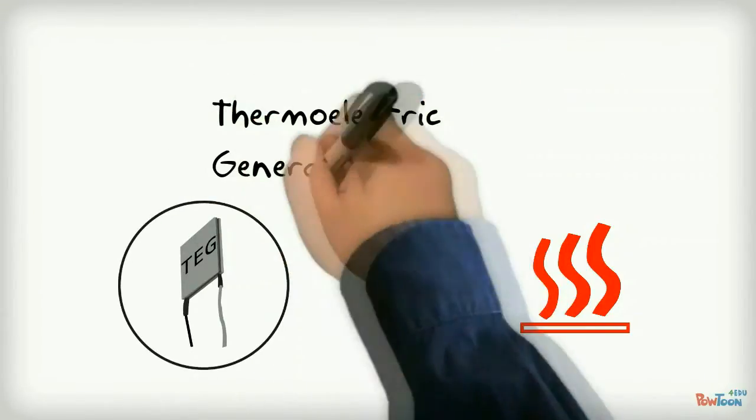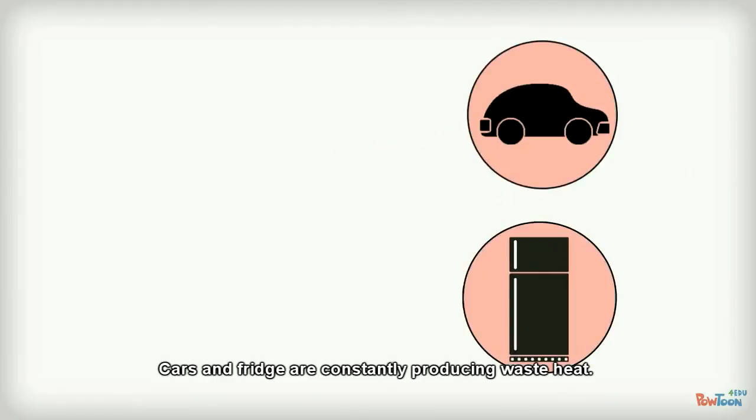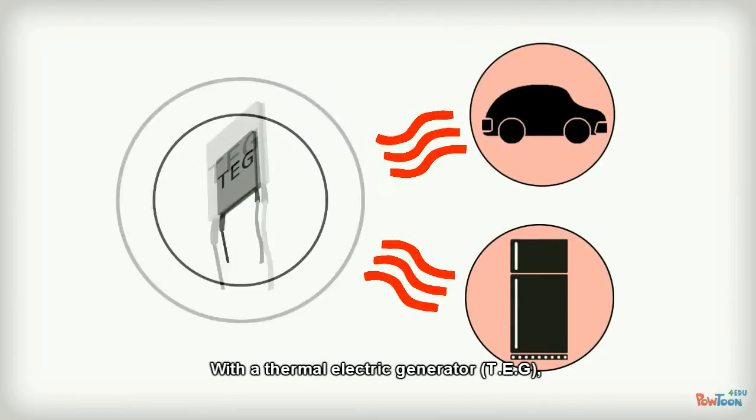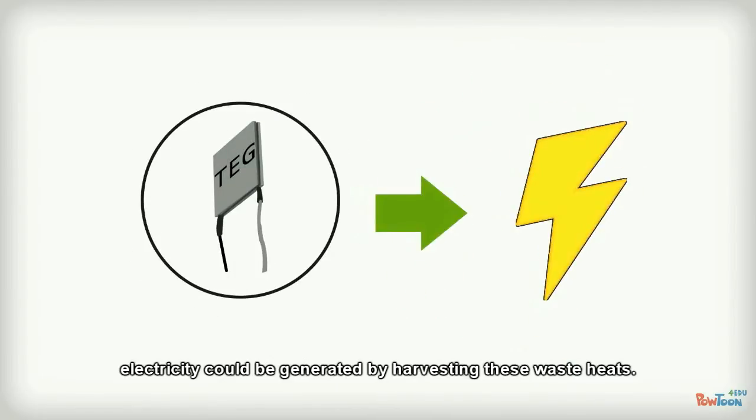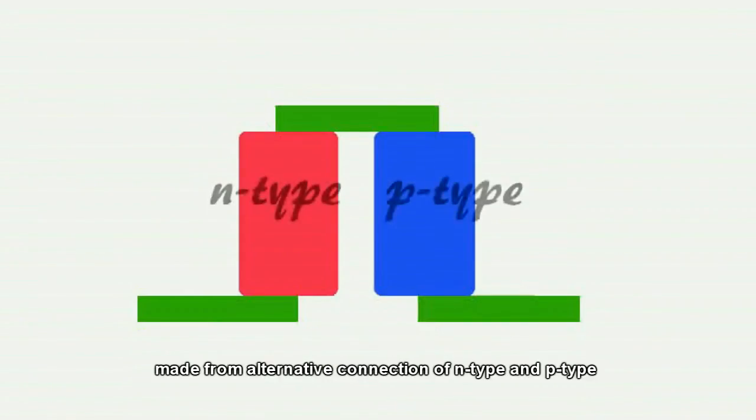Thermal electric generator. TEG. Cars and fridges are constantly producing waste heat. With a thermal electric generator, electricity could be generated by harvesting these waste heats. TEG is a composite material made from alternative connections of n-type and p-type semiconductors like bismuth telluride in series.